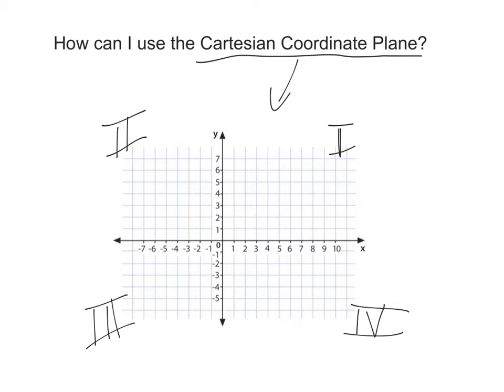So you have the point 2, 2. This is always going to be x, y, and so you go over 1, 2, and then you go up 2, and you put your point right there on 2, 2.